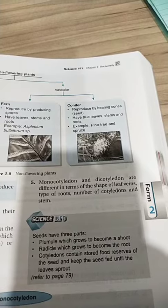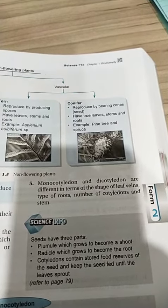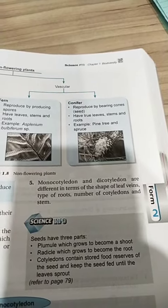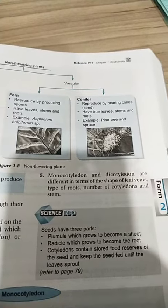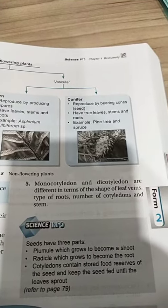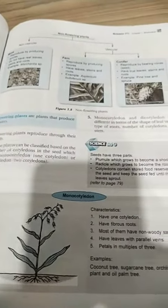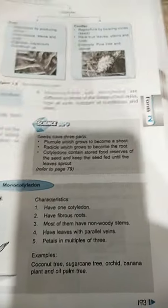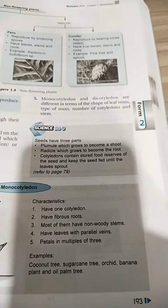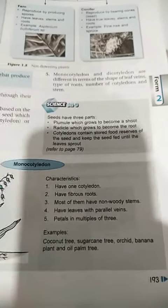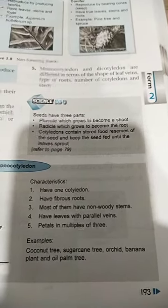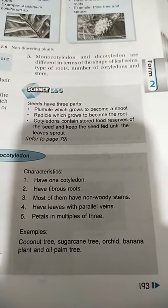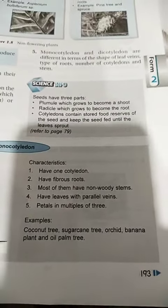Monocotyledons and dicotyledons are different in terms of the shape of leaf veins, type of roots, number of cotyledons, and stem. Monocotyledons have one cotyledon, fibrous roots, mostly non-woody stems, leaves with parallel veins, and petals in multiples of three. Examples include coconut tree, sugarcane, orchid, banana plant, and oil palm trees.